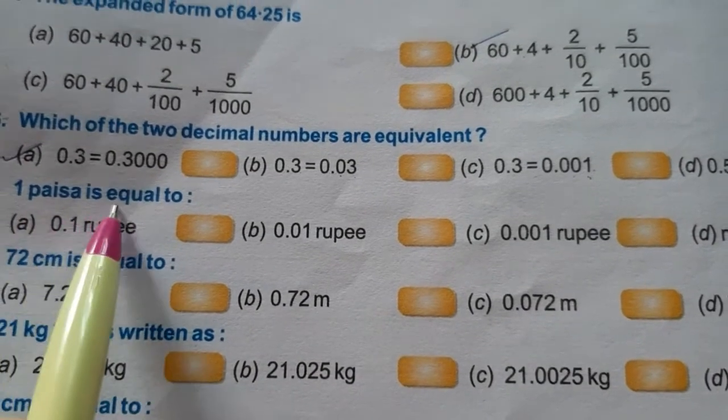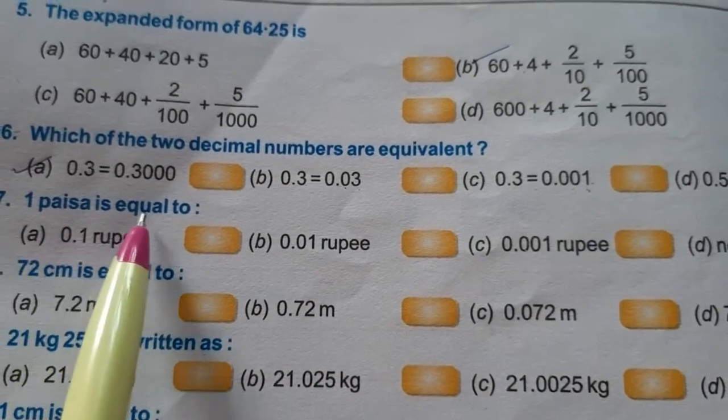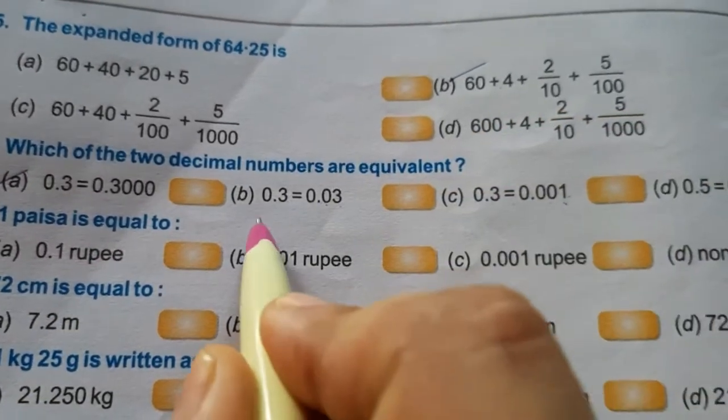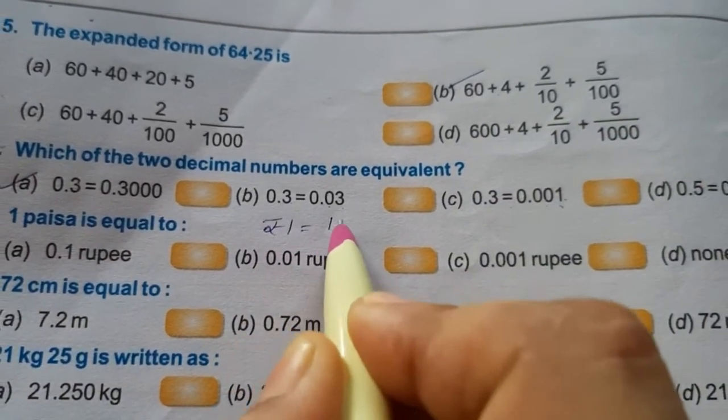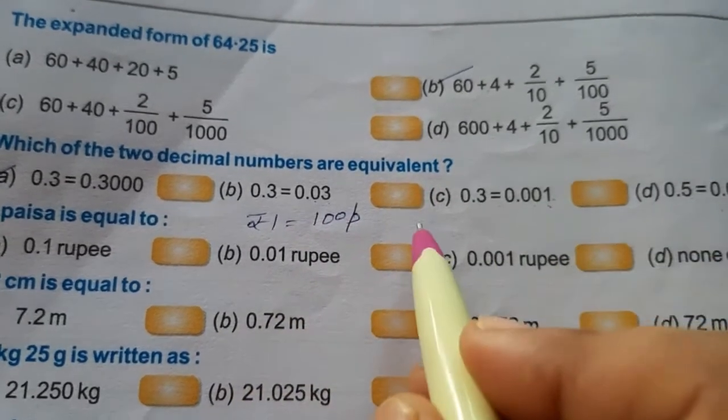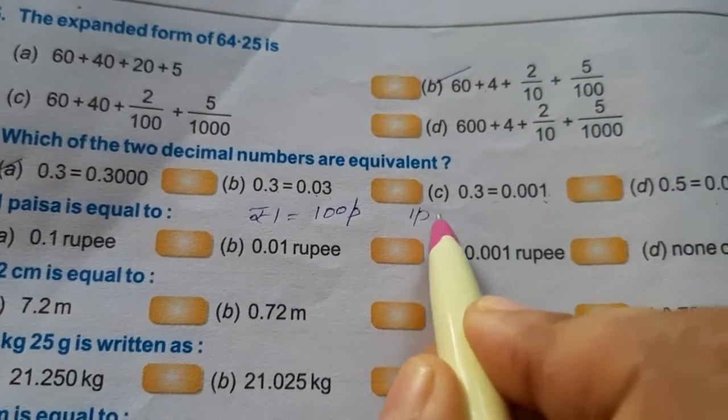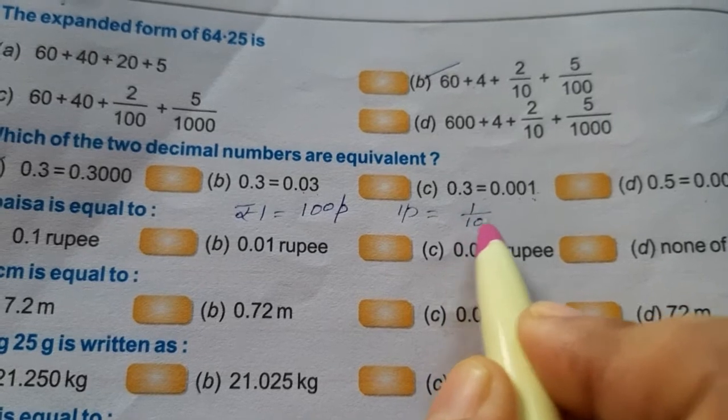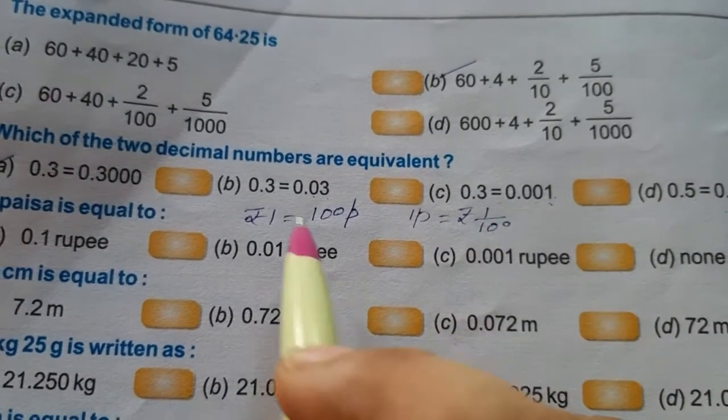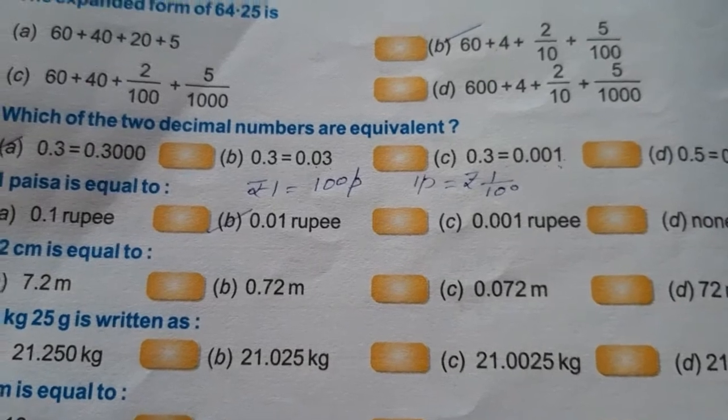Next is 1 paisa is equal to. We know 1 rupee is equal to 100 paisa. So 1 paisa will be equal to 1 by 100 rupees, or 1 by 100 can be written as 0.01.